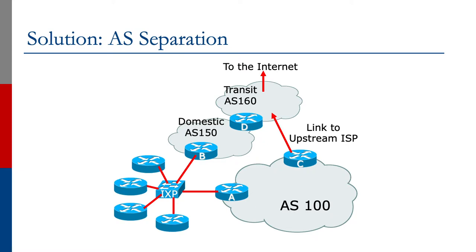The solution is to separate the autonomous systems out. There are other solutions, but they are actually very fiddly and really not best practice. The best solution is to separate the autonomous systems. After all, an autonomous system represents routing policy — it's not the fence around the company's network. It's to separate the policy applied to different parts of the infrastructure.